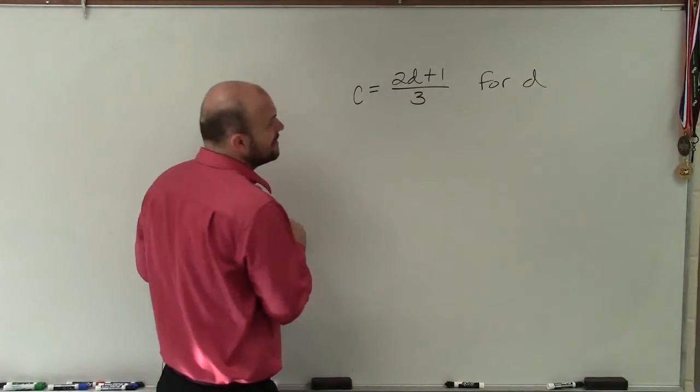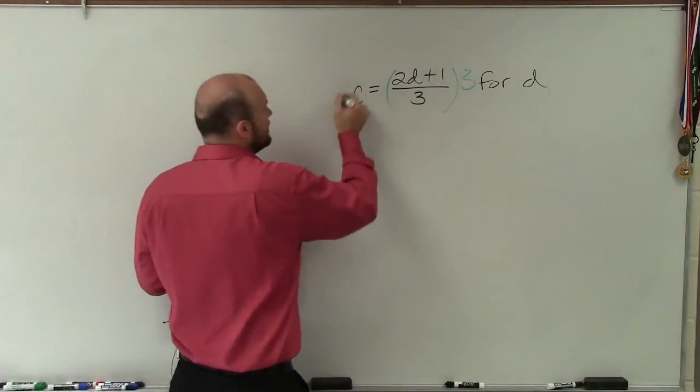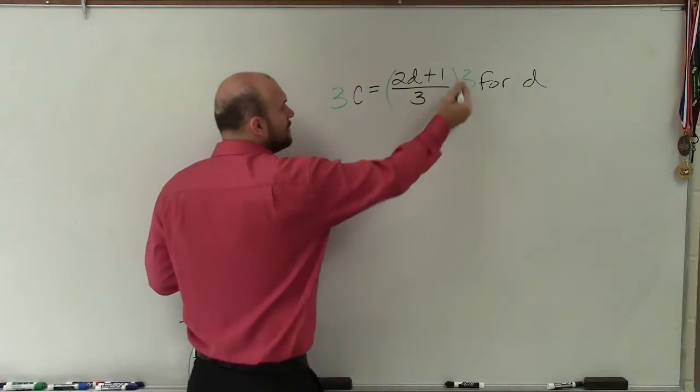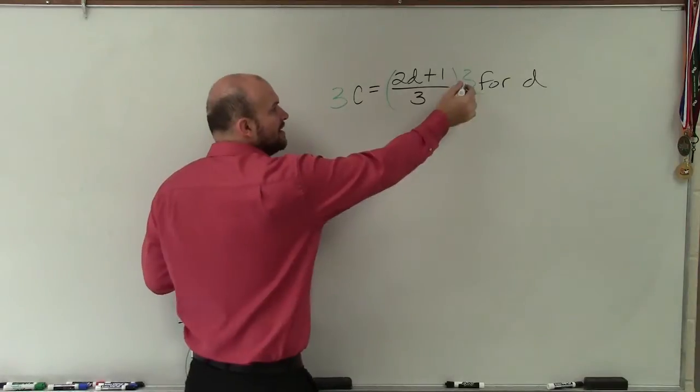You see I have 3 as my denominator. To get rid of my fraction, all I simply need to do is multiply by 3 on both sides. Remember, here's a fraction, and 3 is a whole number. So really, I can rewrite that as 3 over 1.